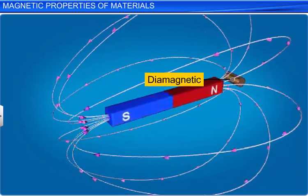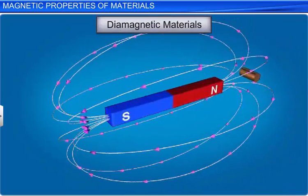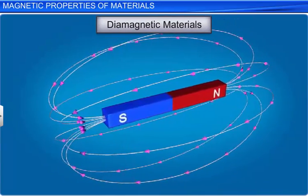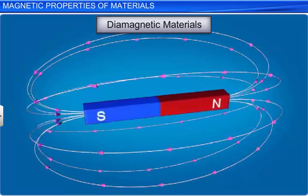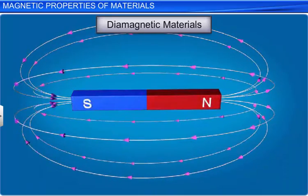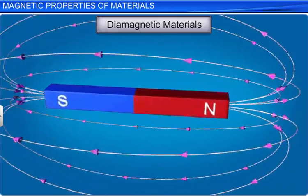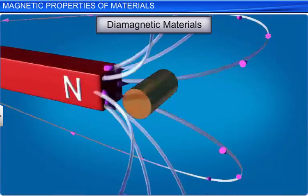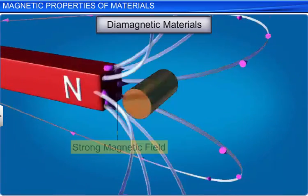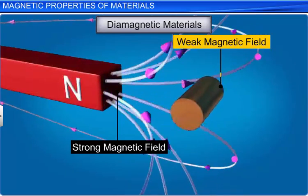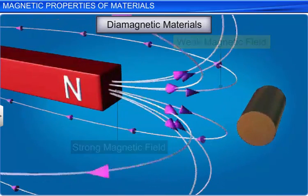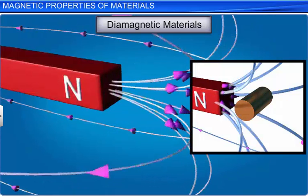Diamagnetic materials are the materials that are repelled by magnets. When a bar of diamagnetic material is placed in a non-uniform external magnetic field, it tends to move from a region of strong magnetic field to a weaker magnetic field. The magnetic field lines are expelled or repelled by the diamagnetic material and the magnetic field inside the material is reduced.